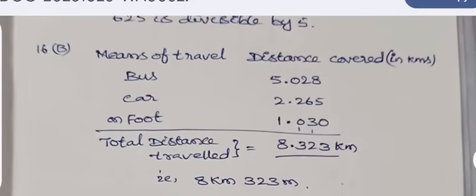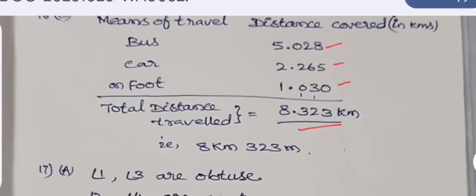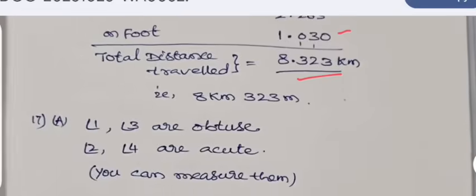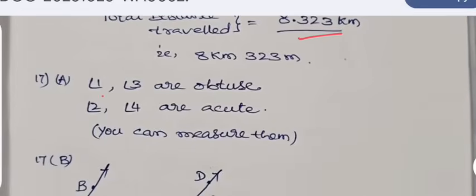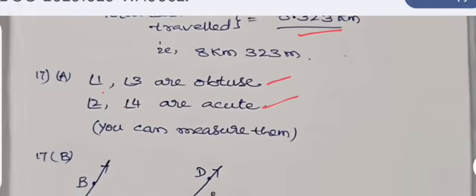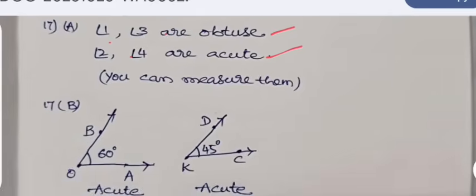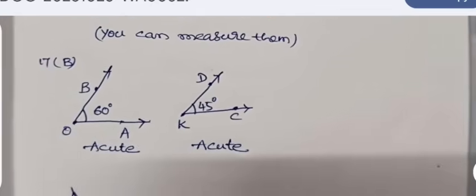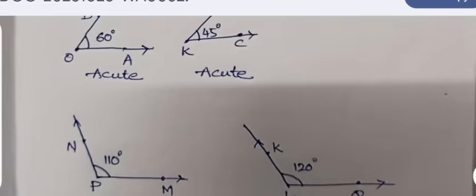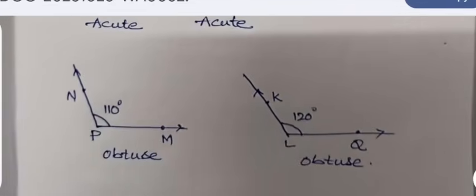The person traveled on these ways, and when this total is added, it comes out to be 8.323 kilometers, that is 8 kilometers and 323 meters. So 1 and 3 are obtuse angles, 2 and 4 are acute angles. You can take your instruments and measure the angles and check. In 17, the two acute angles are 60 degrees and 40 degrees, and in the same way 110 and 120 degrees are obtuse angles.